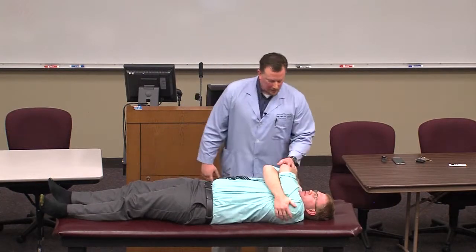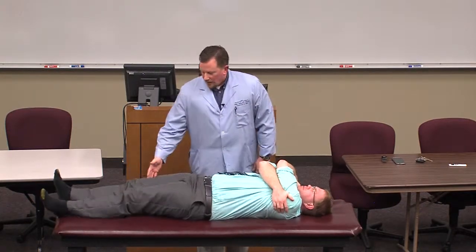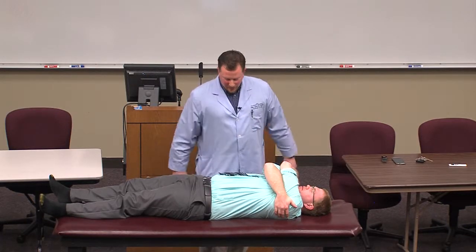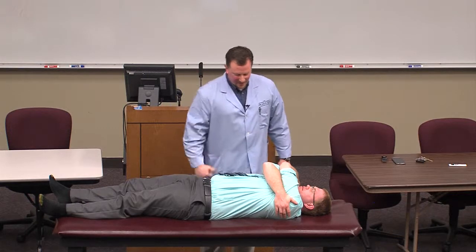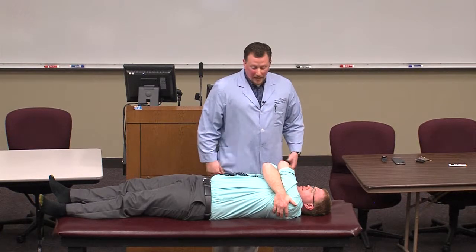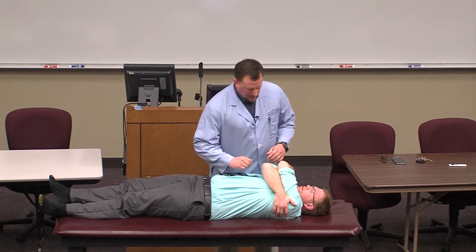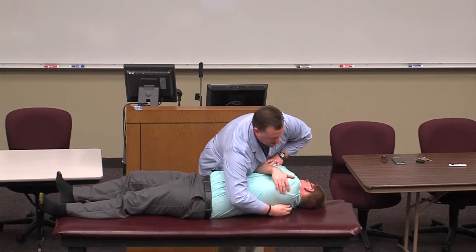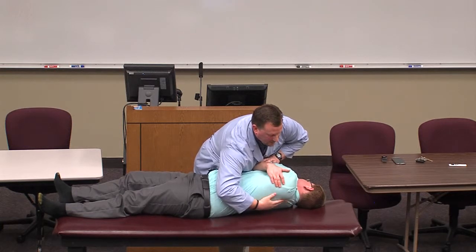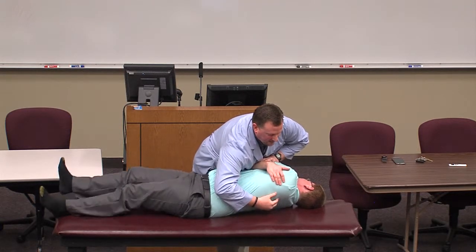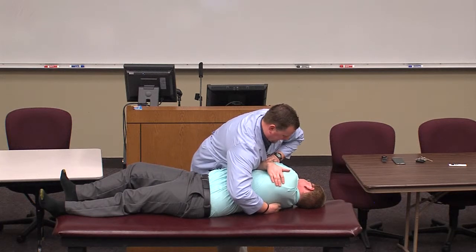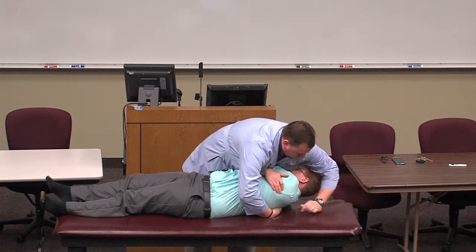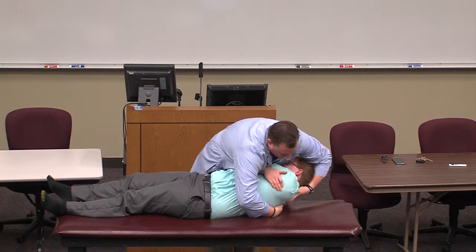Have him lay on his back — these are typically structural rib issues as opposed to respiratory ones. Normally my table goes up and down with buttons, and I'd have it at about the height of my knee so I can get over the top. I'll work with what we have here. Deep breath in for me...